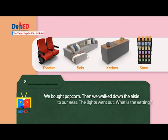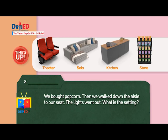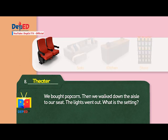Number eight: We bought popcorn. Then we walked down the aisle to our seat. The lights went out. What is the setting? Clues: The theater. The sala. The kitchen. The store. Answer: The theater.